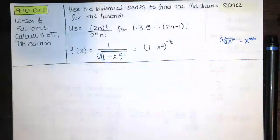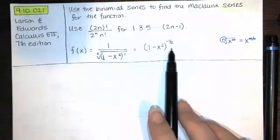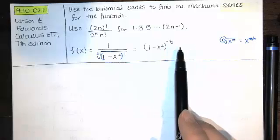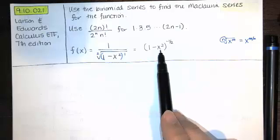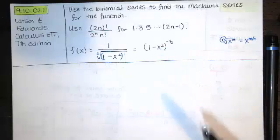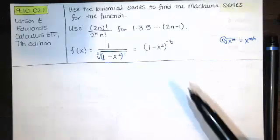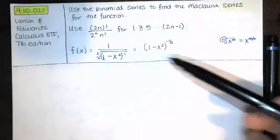We're going to use our binomial series to evaluate this. In the Larson and Edwards calculus textbook, this exponent is a k, and rather than a negative x squared here we usually just have a plus x. We could make a substitution, but I would rather talk through the binomial series formula first so you understand where it comes from, and then use that formula we've derived to find the Maclaurin series for this function.